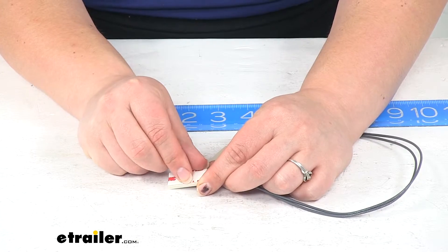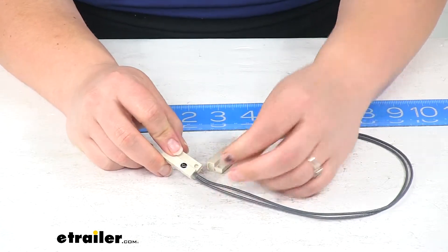There's also some double-sided tape, so you just peel off the backing and press that into place.